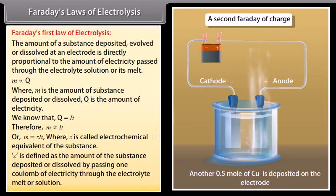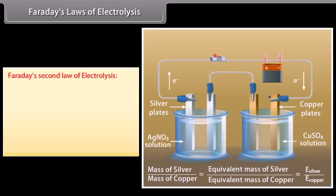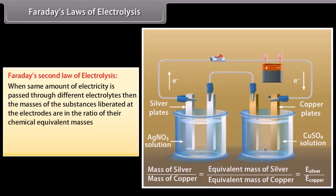Z is defined as the amount of the substance deposited or dissolved by passing one coulomb of electricity through the electrolyte melt or solution. Faraday's second law of electrolysis: when same amount of electricity is passed through different electrolytes, then the masses of the substance liberated at the electrodes are in the ratio of their chemical equivalent masses.